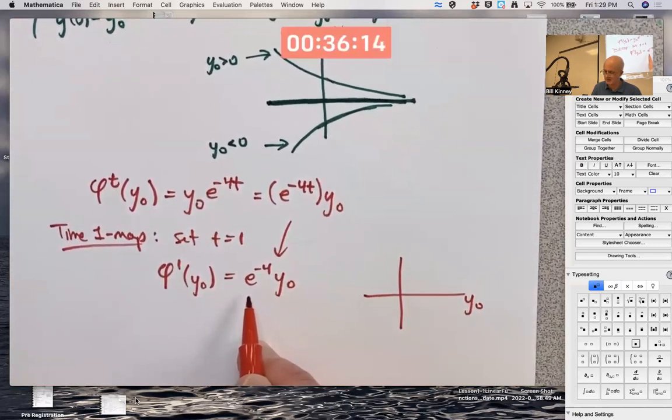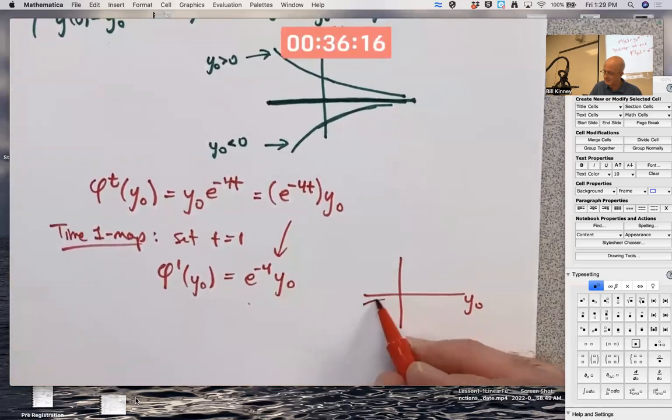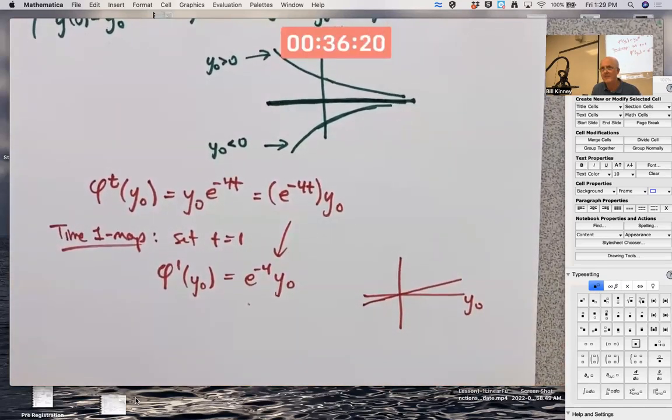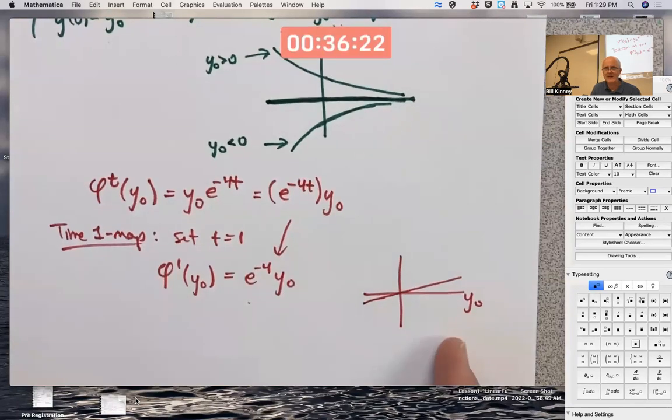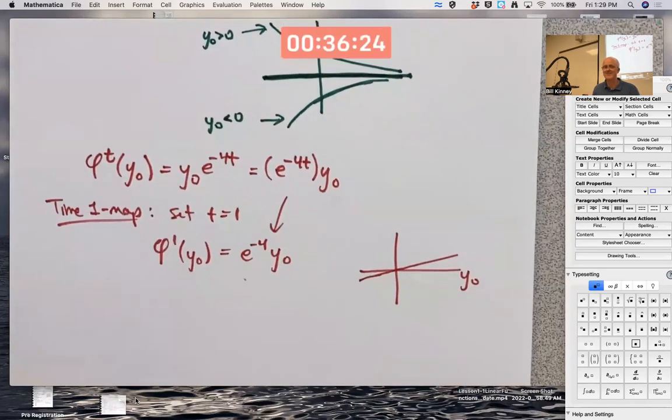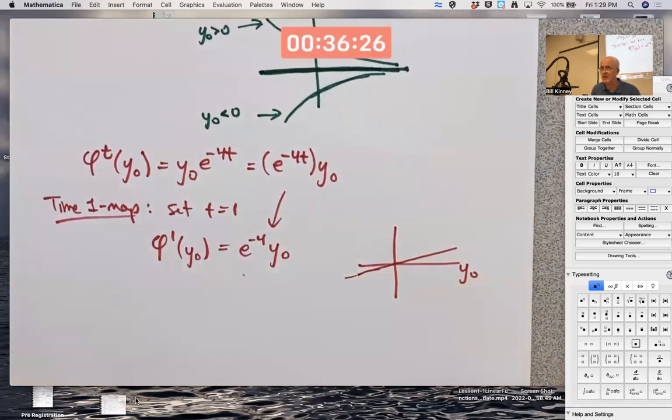e to the negative 4 is a pretty small number, close to 0, but it is positive. The graph, this would be a straight line with a small slope, small positive slope. Is it worth graphing it? It actually is. I don't know if I'll have time to explain why here. Why is this worth thinking about?